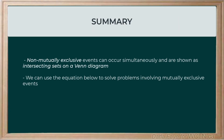To summarize, in this video we started by talking about what it means to be non-mutually exclusive — that these events can occur simultaneously. On a Venn diagram, these two sets would be intersecting, showing favorable outcomes in common. Finally, we used our equation to determine the probability of A or B for non-mutually exclusive events and solved a few problems.